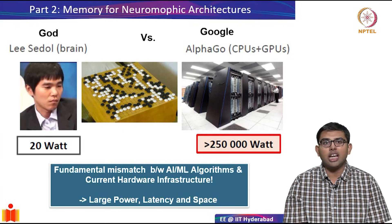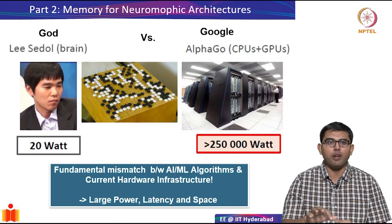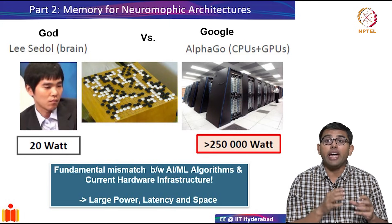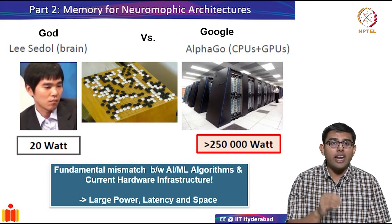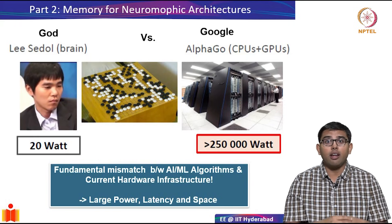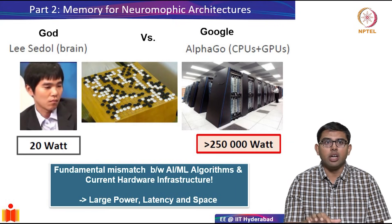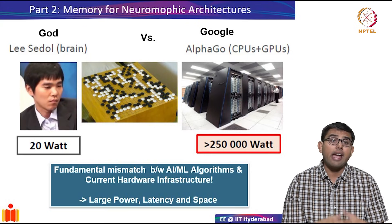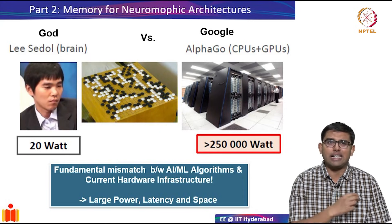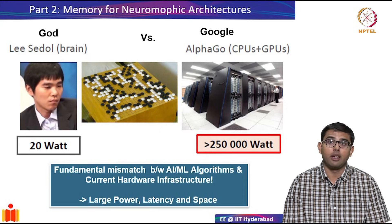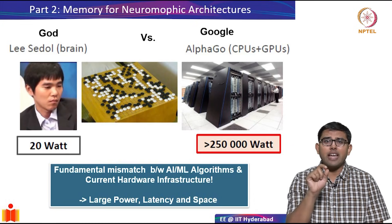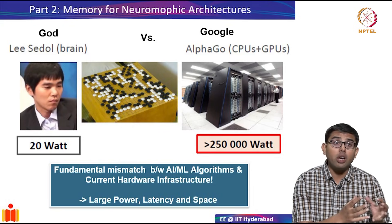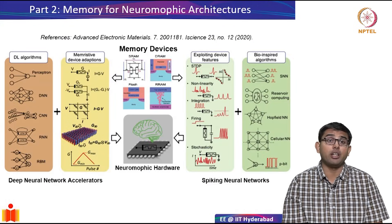This is primarily because while the current computing systems are built around the von Neumann architecture, with spatially separate memory and compute elements, AI ML-based computing, which is running on bio-inspired neural networks, requires a more tightly bound architecture. This fundamental mismatch between what we have and what we really need causes a large amount of latency and power consumption when we try to force fit AI algorithms into von Neumann architectures. As we will see in the course, for performing the same tasks as a human brain, the Google supercomputing system takes several orders of magnitude higher power and space.